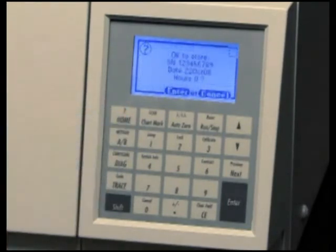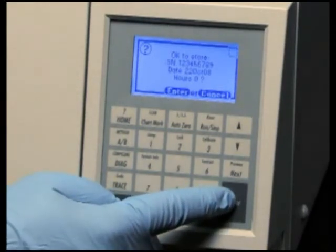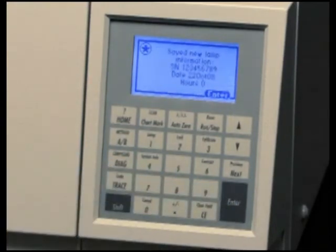Now press the Home key and a confirmation message appears. Press Enter to accept the serial number and date of installation of the new lamp or press Cancel to cancel the entry. Press Enter again to return to the Home page.